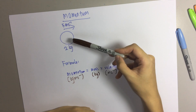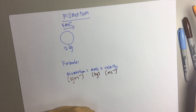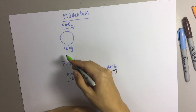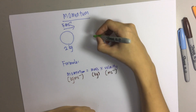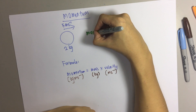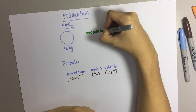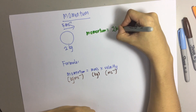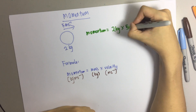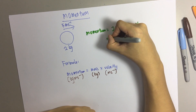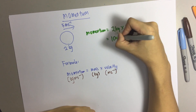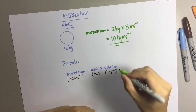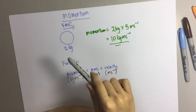So for example, this question — how do we calculate? The speed will be 5 m per second and the mass will be 2 kg. So momentum equals to 2 kg times 5 m per second. So the total will be 10 kg meter per second.